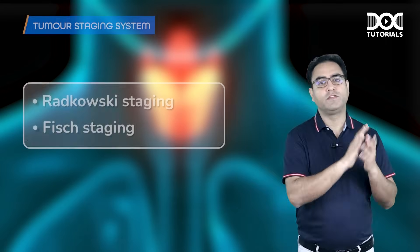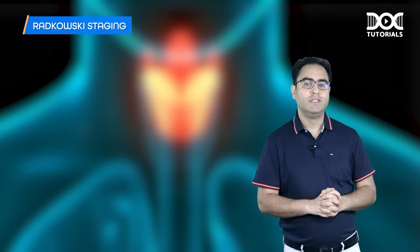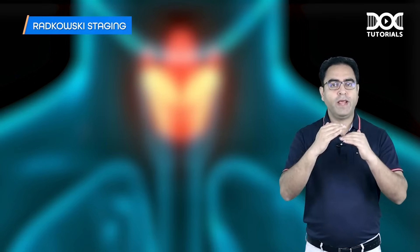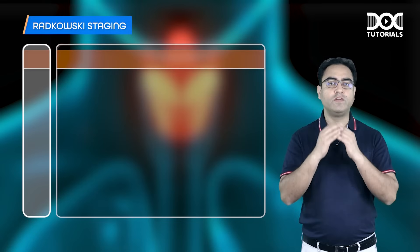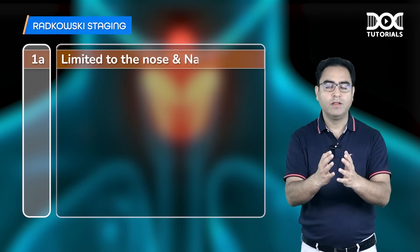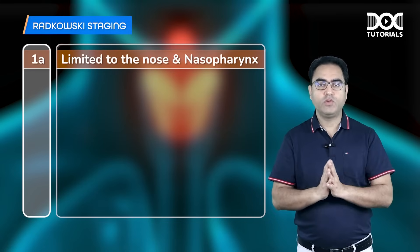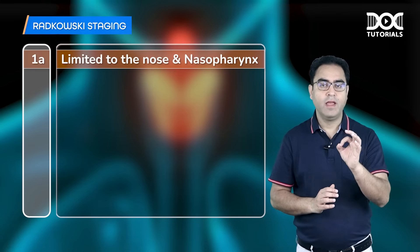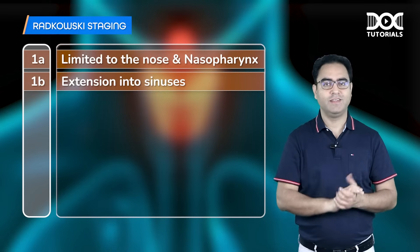Radkowski staging: Stage 1 — tumor extends from the nasopharynx into the nose or sinus region. If only the nose is involved, it is stage 1A; if any sinus is also involved, it is stage 1B.